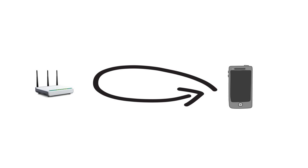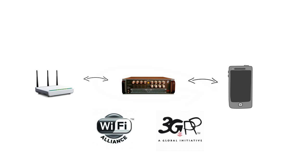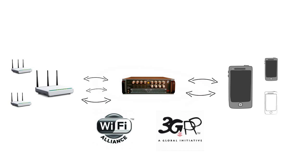How does it work? It's simple. The Azimuth RF channel emulator, known as an ACE, replaces and manages the radio links between the device and access point. The ACE has full control over the radio channel properties like power, delay, interference, reflections, and more. The ACE supports MIMO and can even support multiple access points or multiple devices.